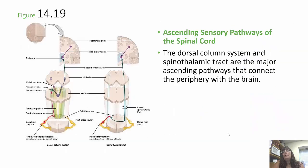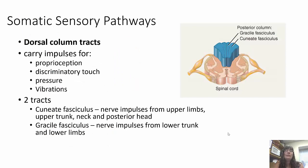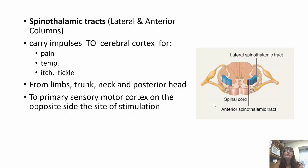We also have ascending and descending tracts. The two major ascending sensory pathways are the dorsal column system and the spinothalamic tract. The dorsal column tracts carry impulses for proprioception, discriminatory touch, pressure, and vibrations — with the cuneate fasciculus carrying impulses from the upper limbs, upper trunk, neck, and posterior head, and the gracile fasciculus from the lower trunk and lower limbs. The spinothalamic tracts — lateral and anterior columns — carry impulses for temperature, tickle, itch, and pain from the limbs, trunk, neck, and posterior head to the primary somatosensory cortex on the opposite side.